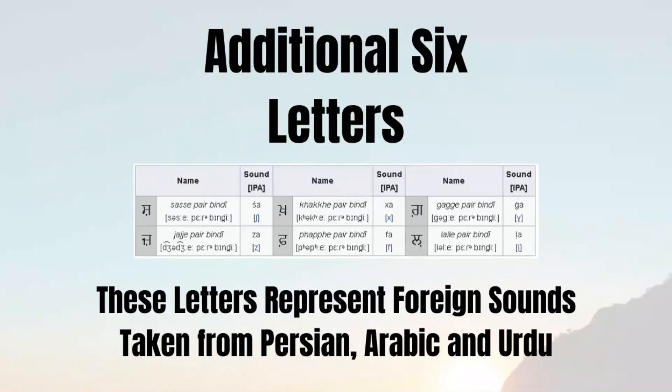There are also an additional six letters that are not in the Guru Granth Sahib but have been recently added to the Gurmukhi script. These letters are used to represent foreign sounds derived from Persian, Arabic, and other languages.